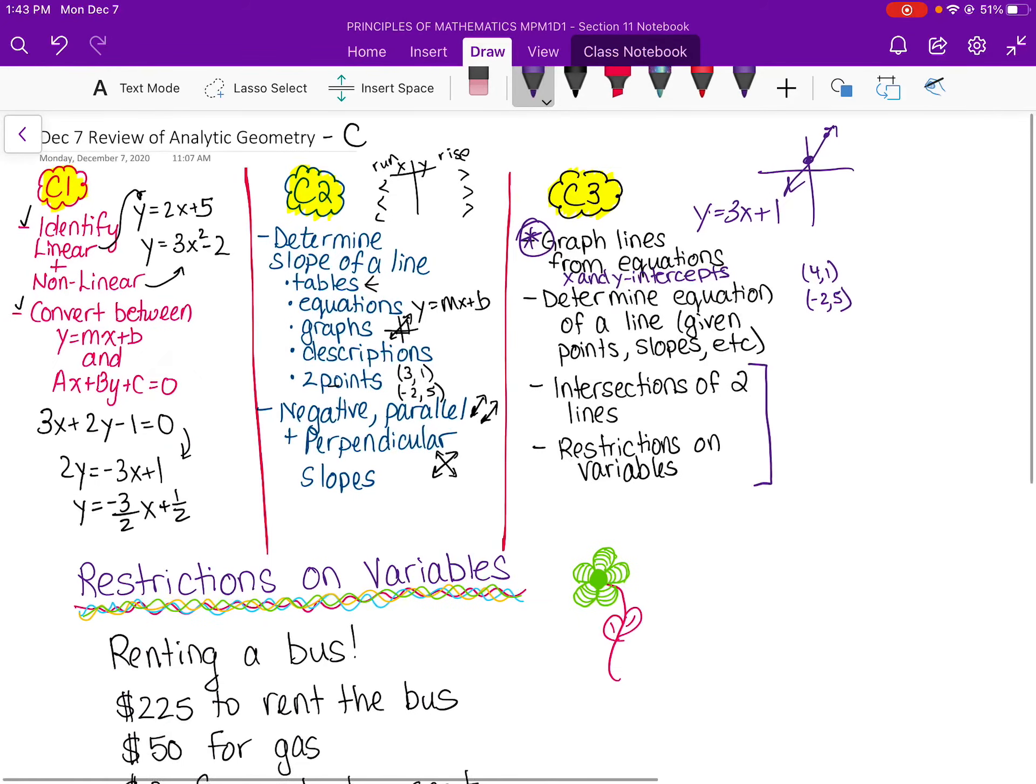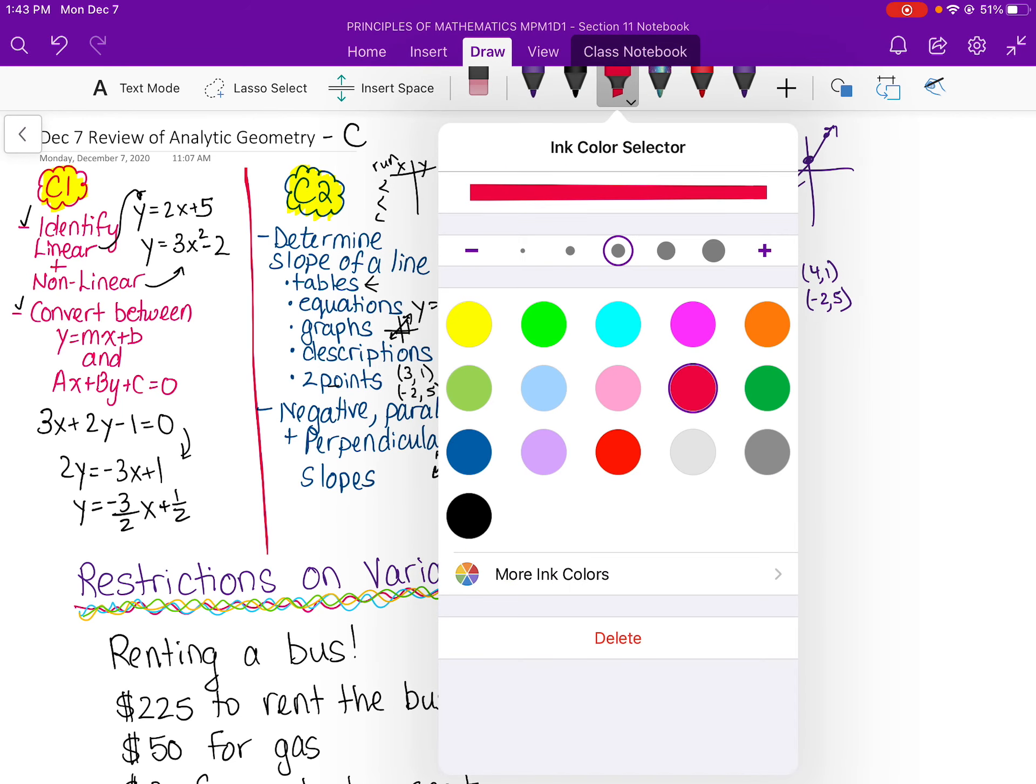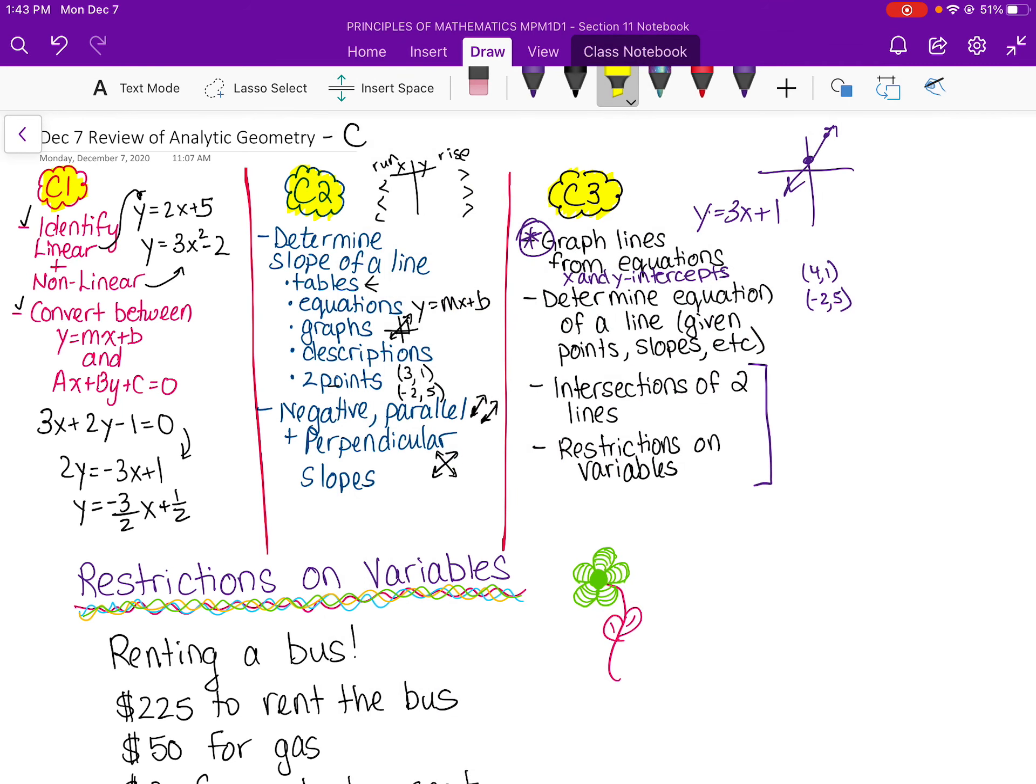Okay, so that's just a summary of C1, C2, and C3, so everything from analytic geometry. Okay, so let's take a closer look at restrictions on variables, but not too close a look. All right, here we go.